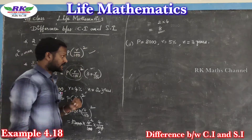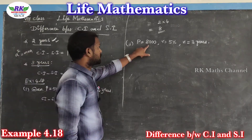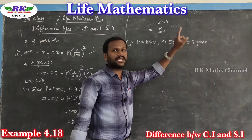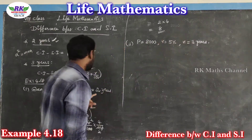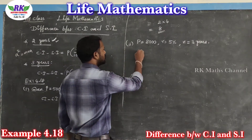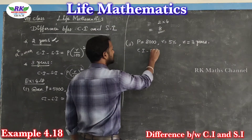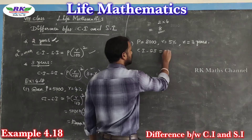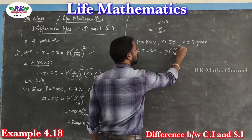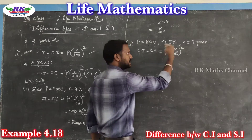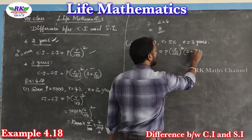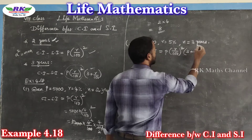Second question: same principal amount, same rate of interest, but duration is 3 years. Compound Interest minus Simple Interest equals the formula: P into R by 100 whole square, for the third year you add 3 plus R by 100.